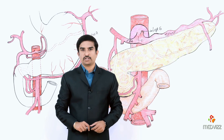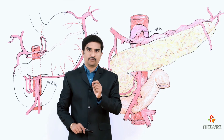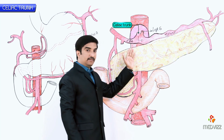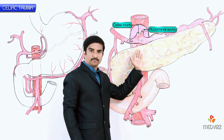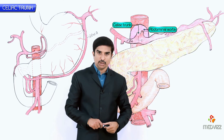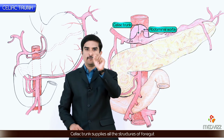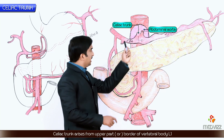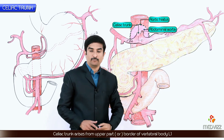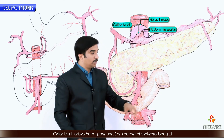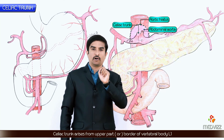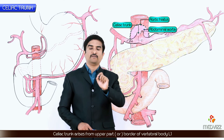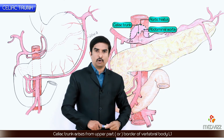In this session we are going to discuss the anatomy of the celiac trunk. The celiac trunk is the unpaired anterior branch of the abdominal aorta, supplying all the structures of the foregut. It arises from the abdominal aorta immediately below the aortic hiatus of the diaphragm, located at the level of T12, anterior to the upper border of vertebra L1.